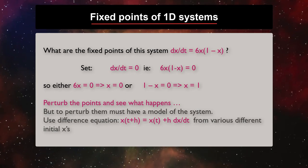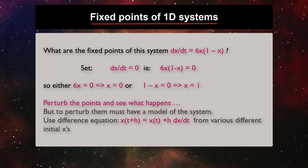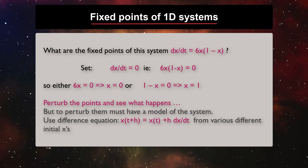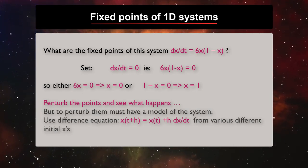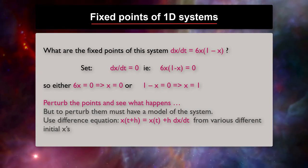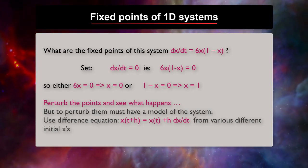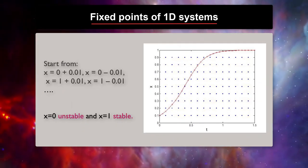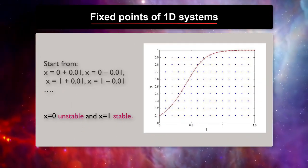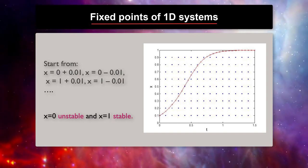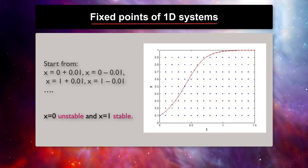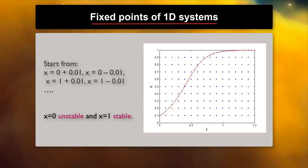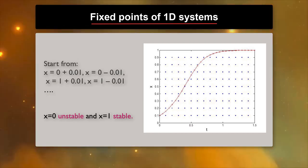Then we want to know if they are stable or not. To test that, we perturb the points and see what happens. To perturb them, we must have a model of the system. We can use, for example, difference equations from various different initial x. If we perturb each of the two fixed points a bit and check if the output of the system will change or not, we can see that x equals zero is unstable and x equals one is stable.